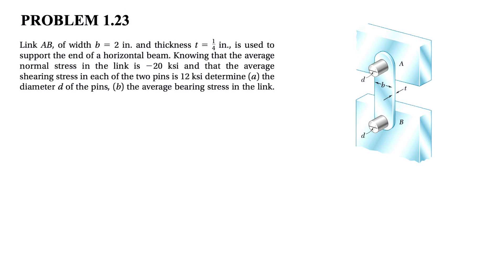Argus, welcome back. We're going to be solving question 23 from the first chapter of the Beer & Johnston textbook, Mechanics of Materials. We have link AB, which has a width of two inches and a thickness of quarter inch. This pin is used to support the end of a horizontal beam. The average normal stress in the link is minus 20 KSI — the minus sign shows the link is in compression — and the average shearing stress in each of the two pins is 12 KSI. In part A, we need to determine the diameter D of the pins and the average bearing stress in the link.